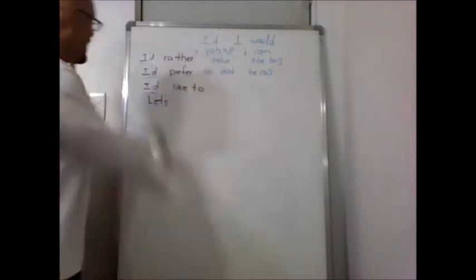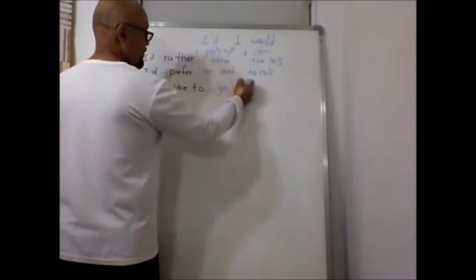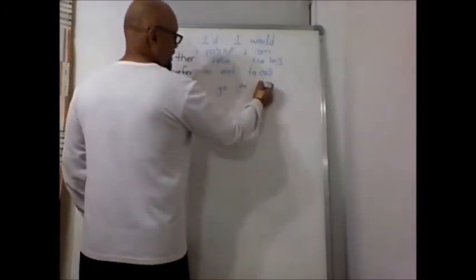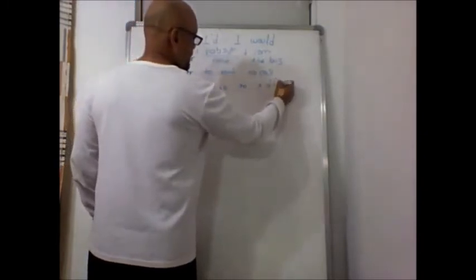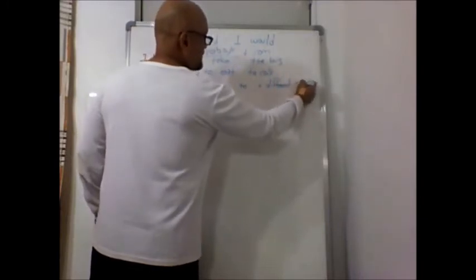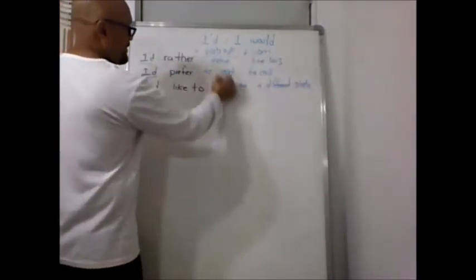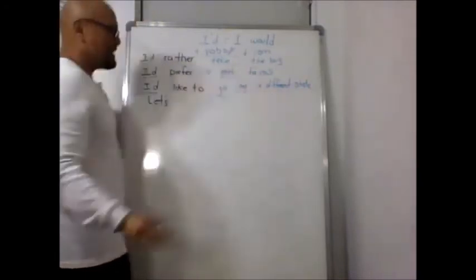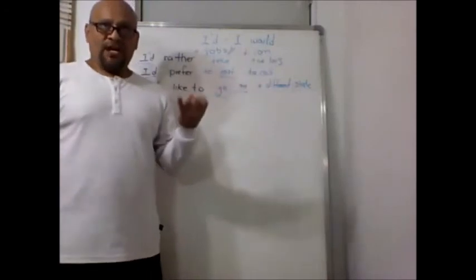'I like to go to a different state.' The verb is still in simple present. Notice we use 'go to' because we're going to a place. For example, 'I like to go to Campeche.'